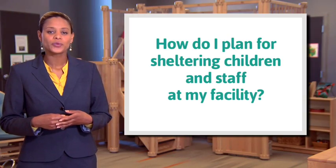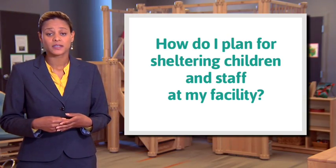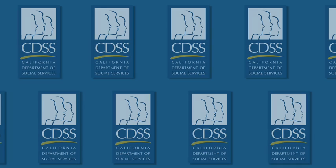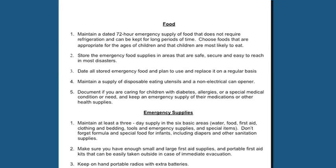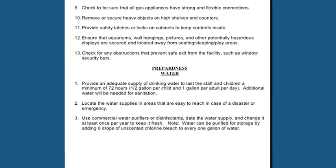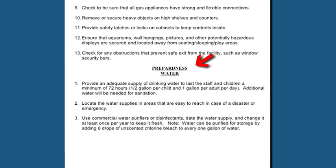How do I plan for sheltering children and staff at my facility? In some emergency situations, it may be safer to stay put than to leave. To be prepared to shelter children and staff at the facility, you should have enough food and water to meet everyone's needs for at least 72 hours. Other important considerations are providing children with temporary sleeping accommodations and bedding, planning on ways to address children's fears and concerns, and if possible, providing them with play materials and activities.